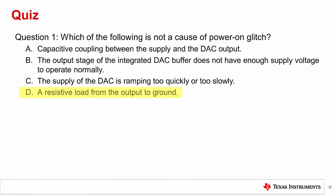The answer is D. Let's review the other choices. First, capacitive coupling between the output supply and the DAC output can contribute to glitch as a transient on the supply will induce a voltage on the DAC output. Secondly, the output stage of the output buffer can cause current to be conducted directly to the DAC if the pre-output stage does not have sufficient supply headroom.